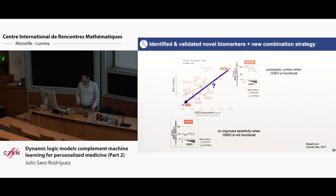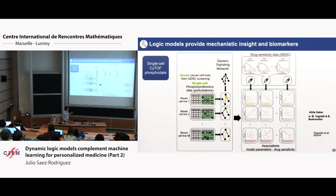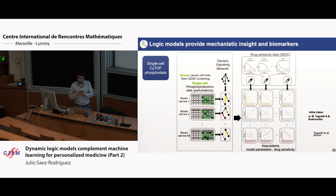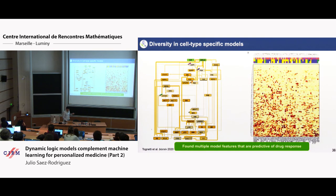One thing that is very exciting for us is how to do this with single cells. What I showed until now is looking in bulk — you take a cell line and get an average measurement, which comes back to the question of heterogeneity. But now there are ways to get the phosphorylation of individual cells in an experiment. Very recently we used this type of data with a group of Bernd Bodenmiller in Zurich to do more or less the same analysis, now at the single cell level.